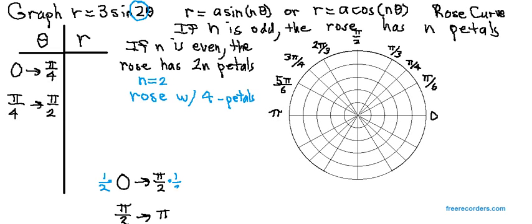So, if I multiply 0 times 1 over 2, I still get 0. If I multiply pi over 2 times 1 over 2, I get pi over 4.